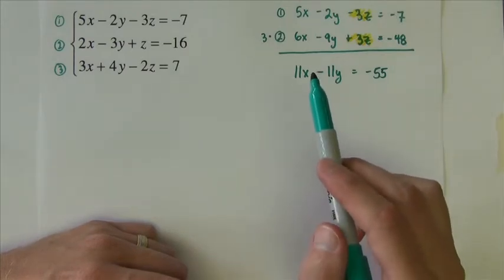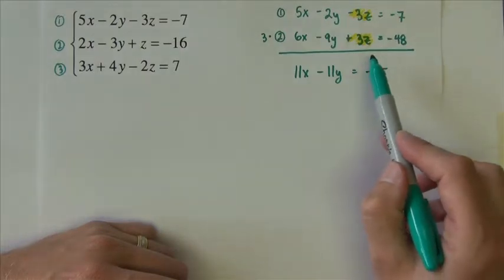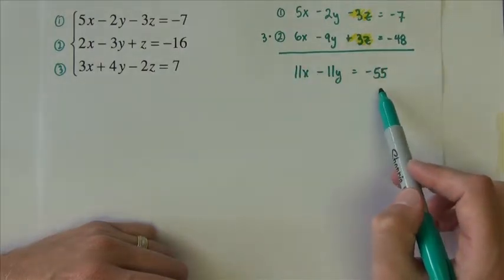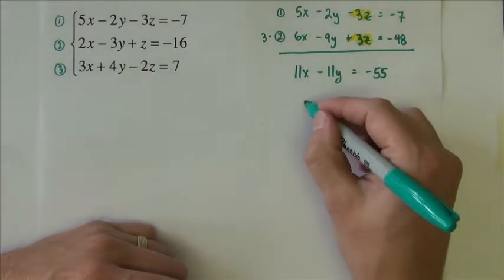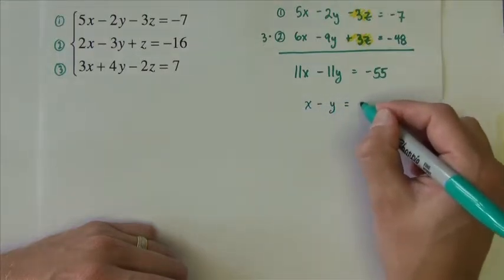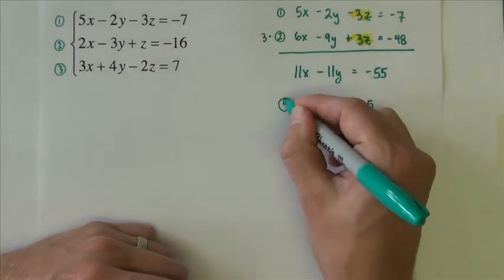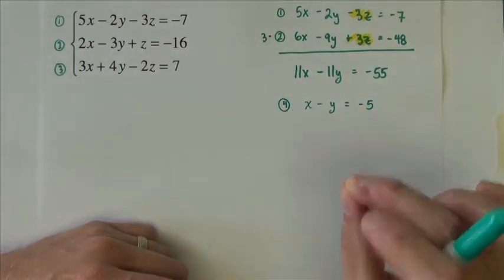The z's are canceling by design. I get 11x minus 11y equals negative 55. Now this doesn't always happen, but notice that this equation contains all numbers that are divisible by 11. I'm going to go ahead and divide them all by 11. x minus y equals negative 5. I'm going to label that as equation four and I'm going to save it and come back to it later.